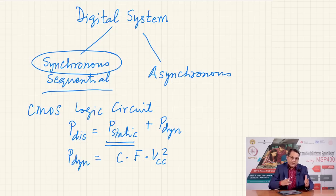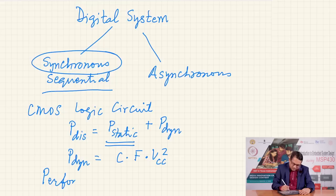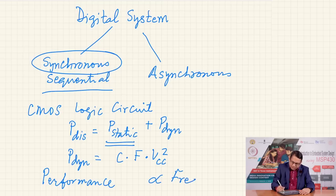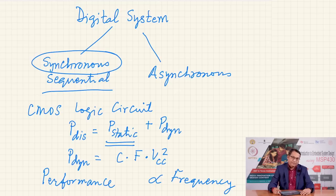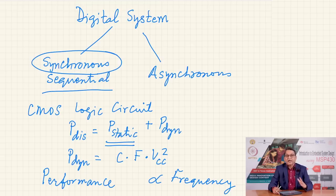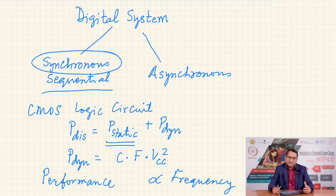That is one argument for keeping the clock frequency low. The argument for keeping the clock frequency high is that the performance of a computer is directly proportional to the frequency — if you double the clock frequency, it will execute the same program in half the time. These two arguments pull in opposite directions, and therefore as an efficient embedded system designer you must strike a balance: one which optimizes power dissipation while the frequency is high enough for the system to work properly.